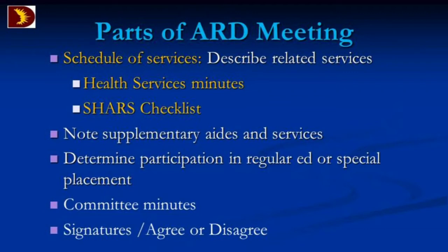From the goals and objectives, we say: based on these, what kind of services should we have? That sends us to the services page. The services page has your instructional accommodations and instructional classes. You'll get nursing services as a related service, perhaps deaf ed interpreting as a related service. Supplementary aids and services might include assistive technology devices or parent training. Then we talk about the setting — general ed, or perhaps a centralized unit. We wrap up with committee minutes and signatures.